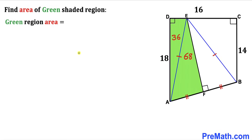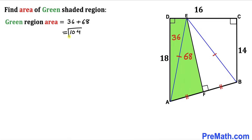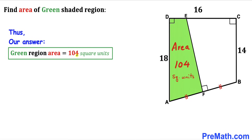For our final step, we calculate the area of the green shaded region by adding the two individual areas: 36 + 68 = 104 square units. Therefore, the area of this green shaded region is 104 square units. Thanks for watching and please don't forget to subscribe to my channel for more exciting videos.